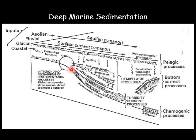Sediments are conveyed via slides, suspension, slope erosion, and direct sediment discharge. At the continental slope, processes such as density currents are common, but at the same time, settling or deposition from suspension, both clastic and biogenic, are also co-occurring. There are two main processes: turbidity currents and hemipelagic processes.